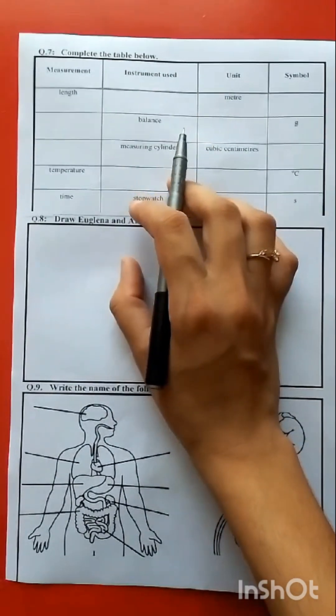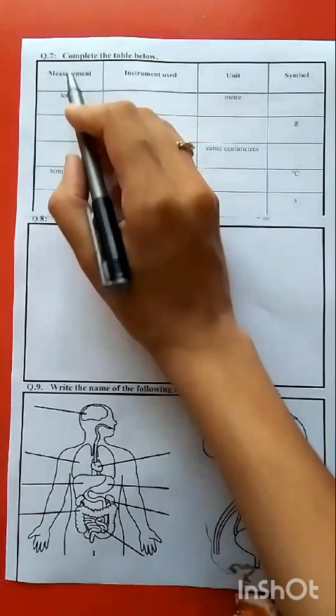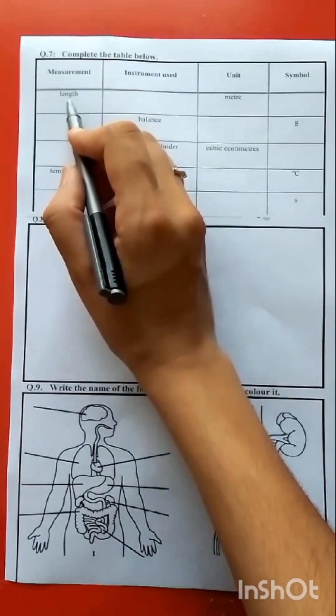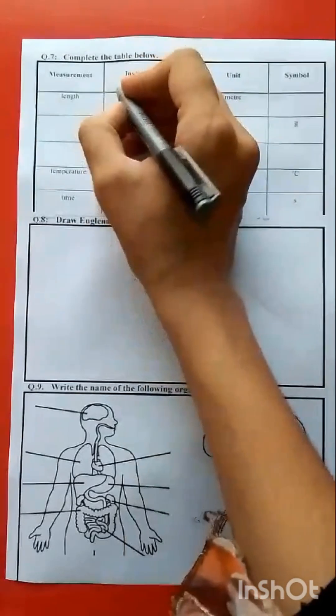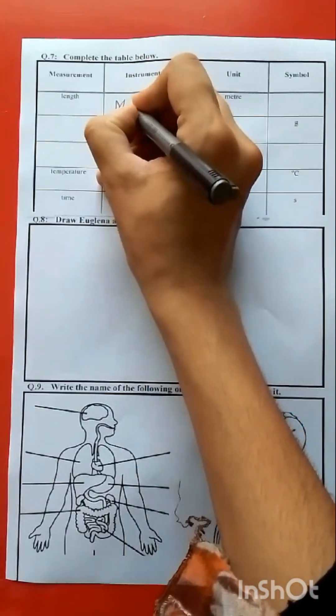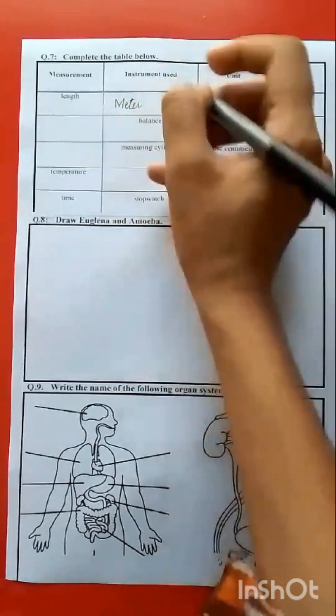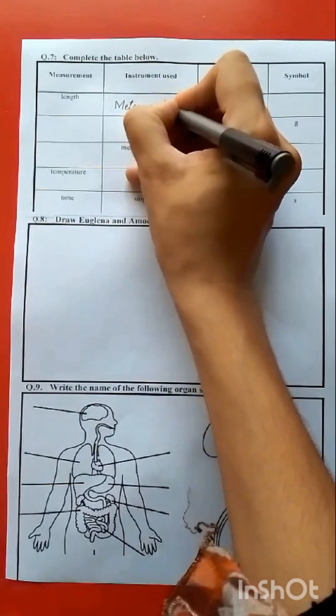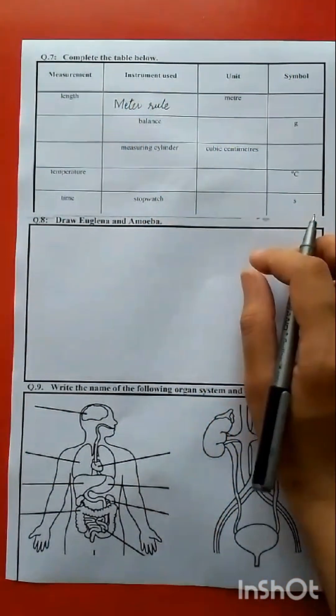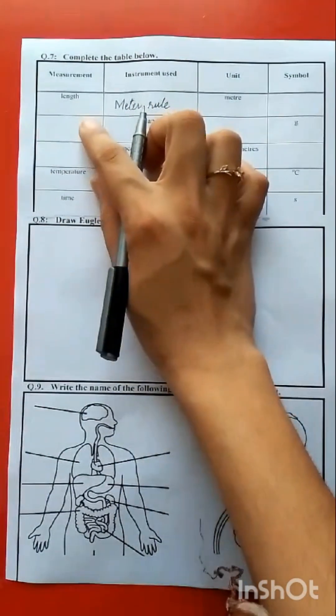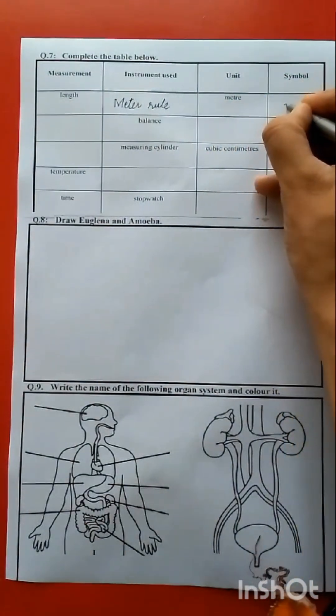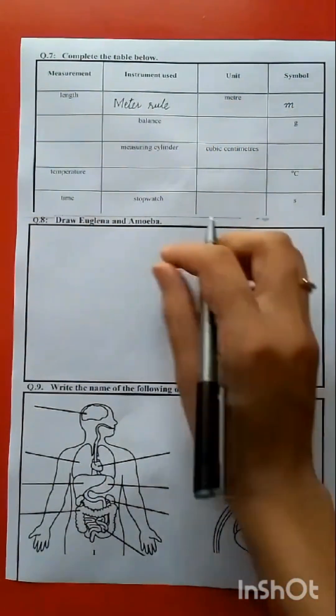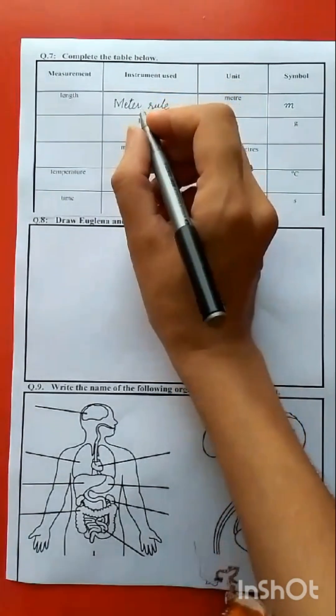You have to solve them. For measurement length, we can measure which instrument we can use to measure the length? We will use meter rule or measuring tape. The unit is given as meter. What is the symbol? M. We will solve this. Next is balance.